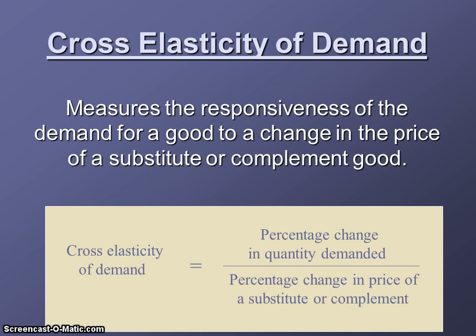The formula we use is the exact same formula as for price elasticity of demand, but with one or two small changes. The percentage change in quantity demanded is still in the numerator, and the percentage change in price is still in the denominator — dollars in the denominator, as usual. But now we're comparing the percentage change in quantity of good A to the percentage change in price of good B.